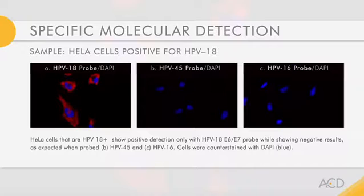For example, the detection of specific HPV subtypes, here HPV 18, is possible while discriminating other subtypes, here HPV 45 and HPV 16.